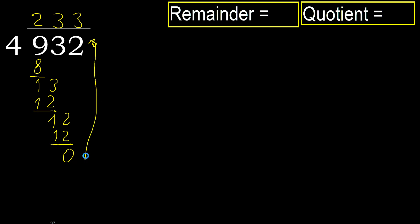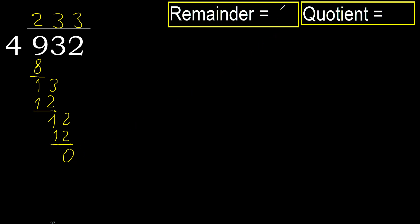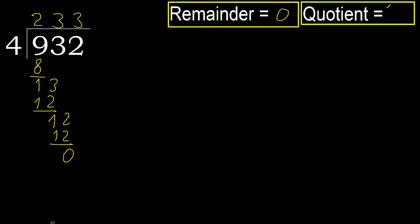That is not a number, therefore finish it. 0. Therefore, 932 divided by 4 is 233.